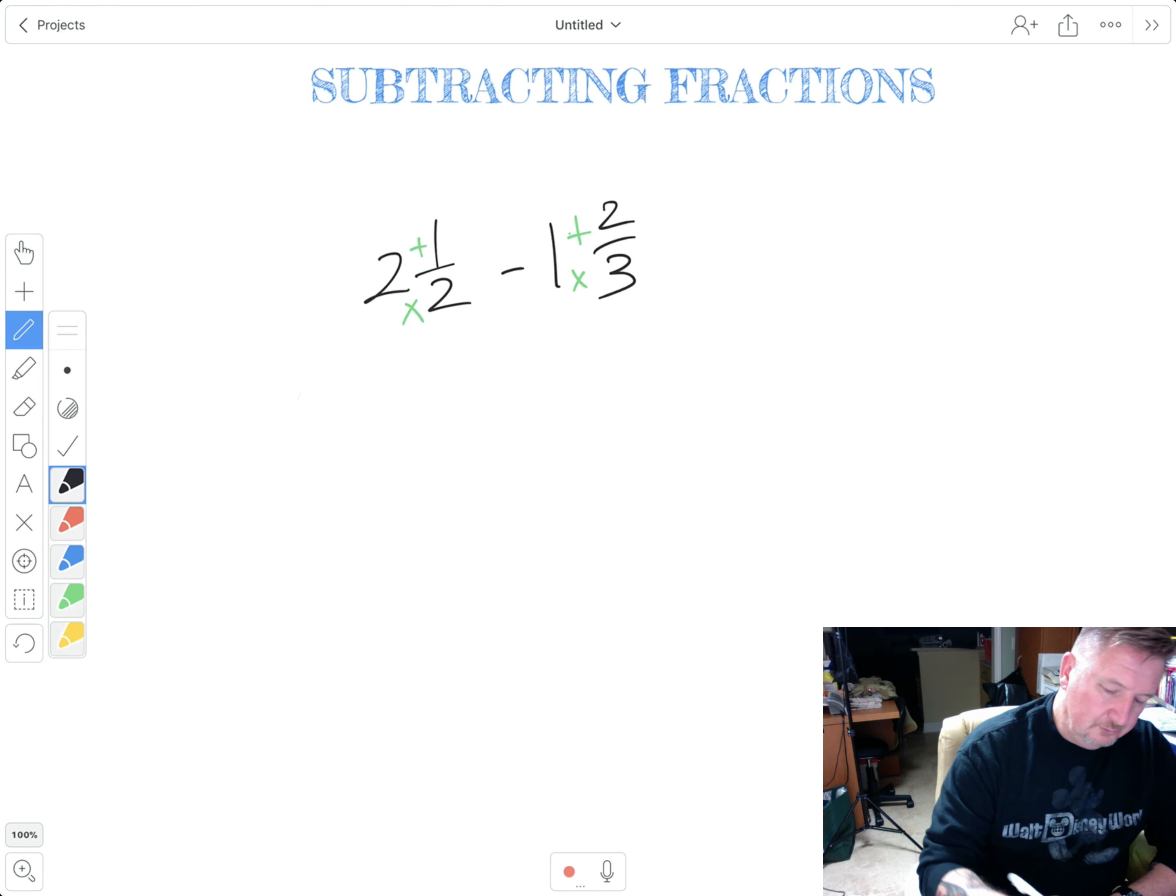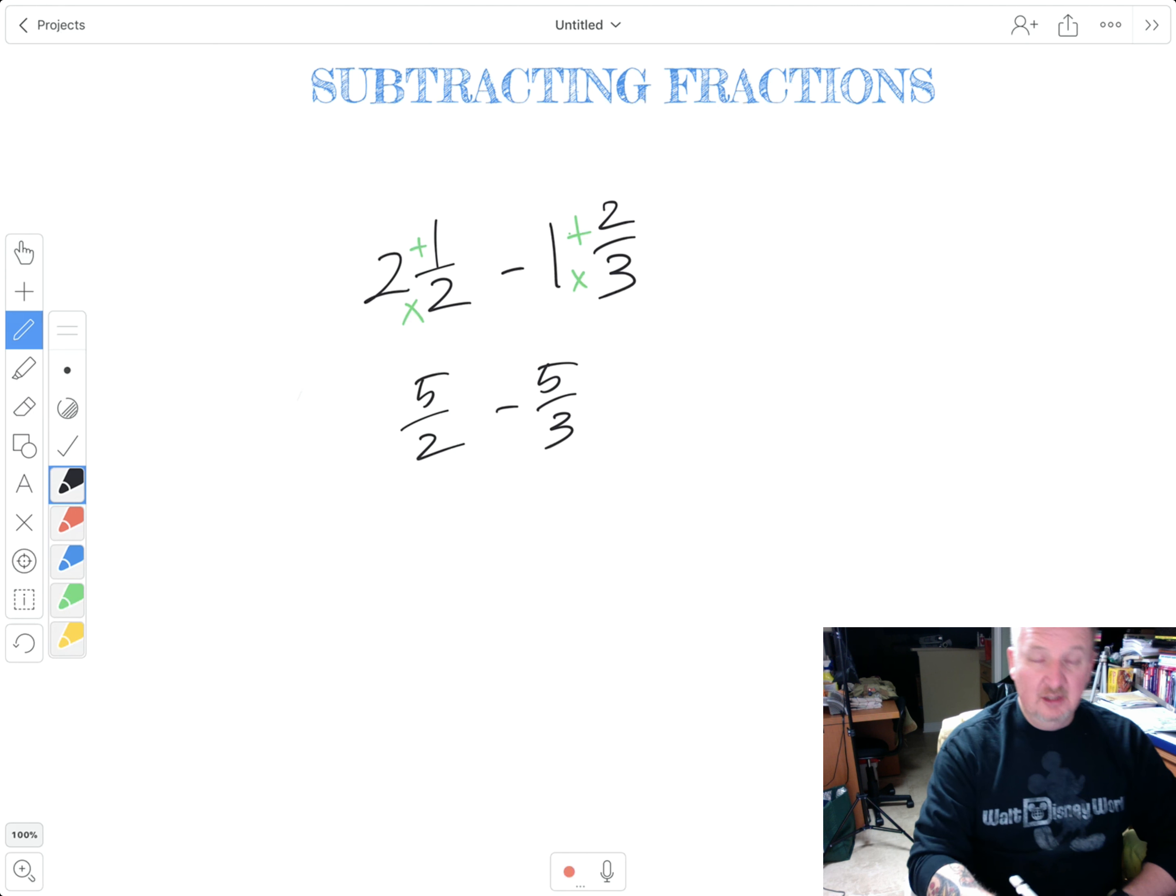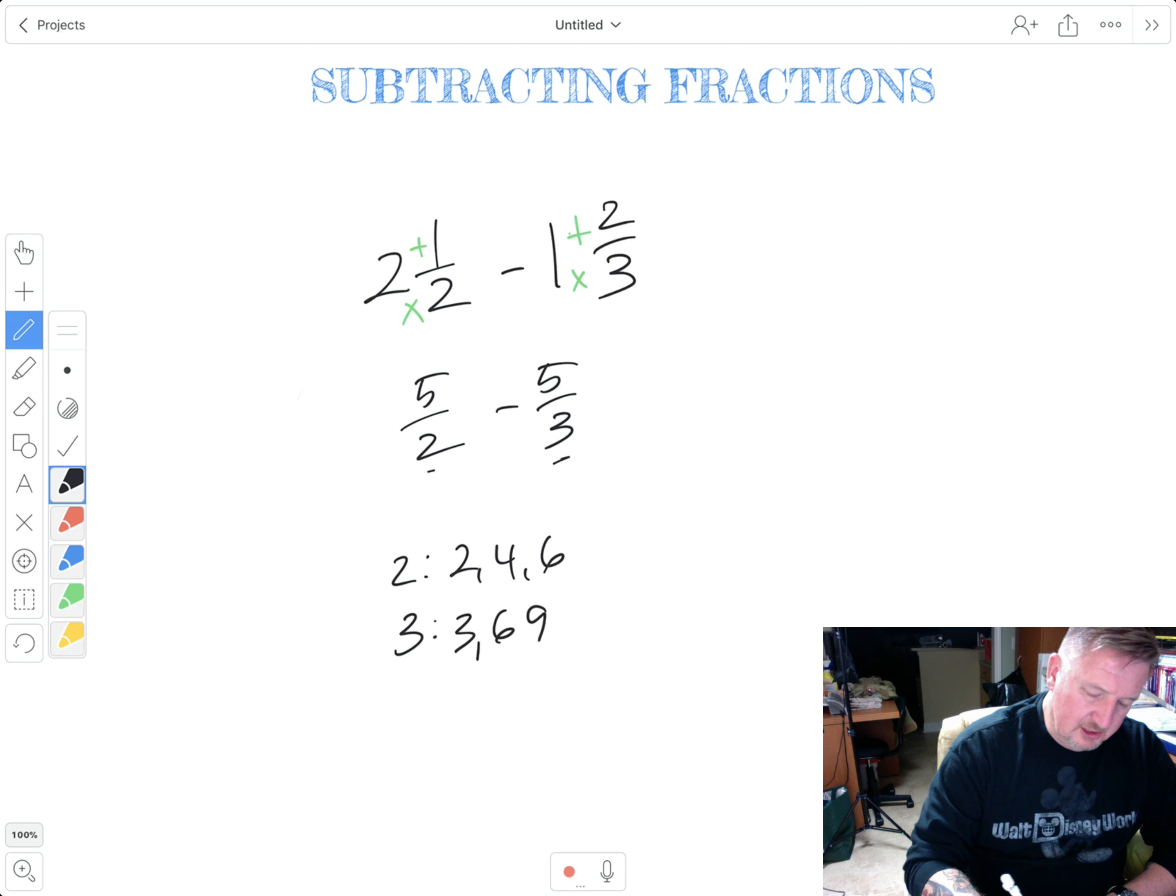So two times two is four plus one is five over two. Three times one plus two is five over three. So it looks like we can just subtract those two fives, but we can't really because we got still two different denominators. We got to fix that. Once again, multiples of three and two. Two, four, six. Three, six, nine. We got the six in common. So I'm going to rewrite this with six in the denominator.